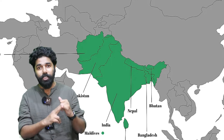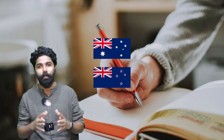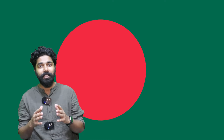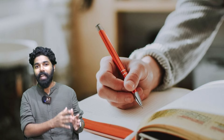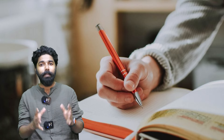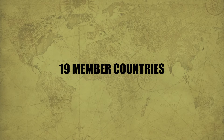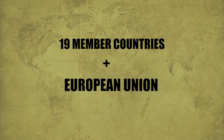For example, if I take Australia, Australia is a member, but New Zealand is not a member. India is a member of the G20, but Pakistan, Bangladesh, and Sri Lanka are not members. So you can study in that way also. Currently, we have 19 member countries plus the European Union.